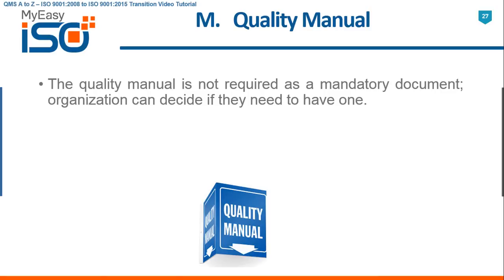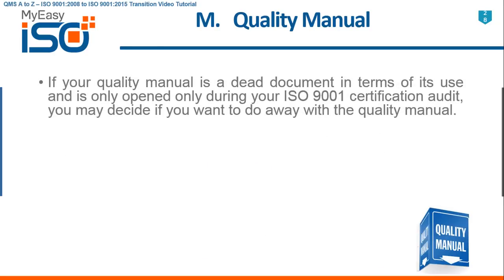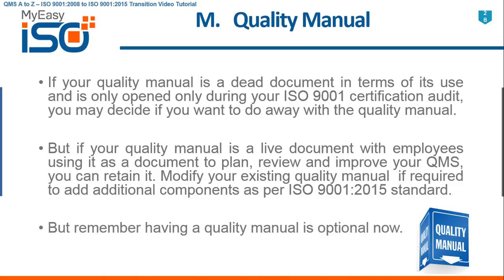M. The quality manual is not required as a mandatory document. The organization can decide if they need to have one. ISO 9001 2015 has removed the requirement of having a quality manual, with the objective of replacing a document-oriented approach with a performance-oriented approach. If your quality manual is a dead document only opened during your ISO 9001 certification audit, you may decide to do away with it. But if your quality manual is a live document that employees use to plan, review, and improve your QMS, you can retain it. Modify your existing quality manual if required to add additional components as per ISO 9001 2015 standard, but remember having a quality manual is optional now.